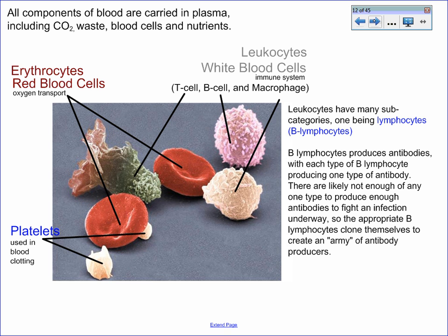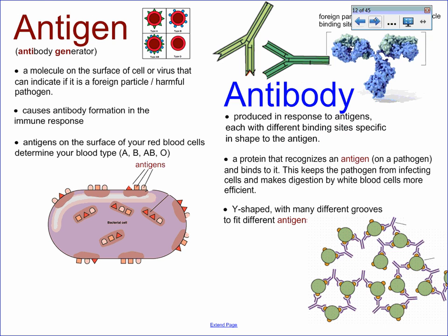Inside your blood there are a few different kinds of cells you should be familiar with. We're going to focus more closely on leukocytes, which can also be called white blood cells. There are types: the B cell, the T cell, and the macrophage cell. B leukocytes produce antibodies, and we'll talk more about that in a bit.